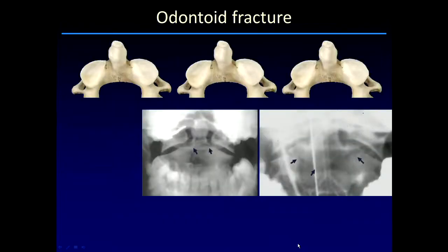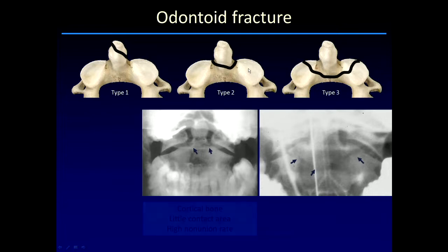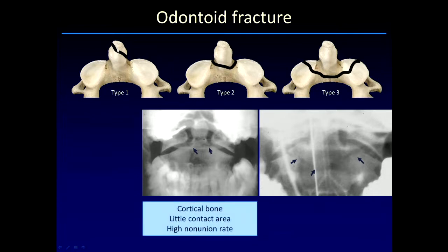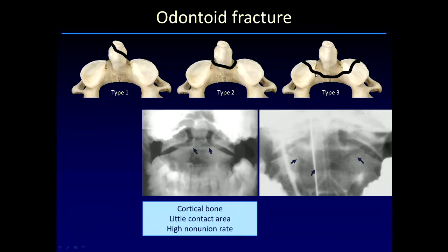At C2, the typical fractures are the Hangman's fracture and the odontoid fracture. Odontoid fractures are classically divided into three types. Type 1 is very rare — an oblique fracture involving the upper odontoid caused by alar ligament avulsion. The two common fractures are type 2 at the base of the dens, and type 3, where the fracture extends into the vertebral body and often involves the C1-C2 articulation, resulting in step-offs at the joint surface.